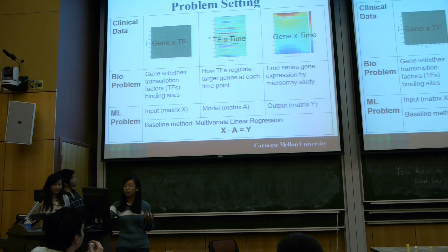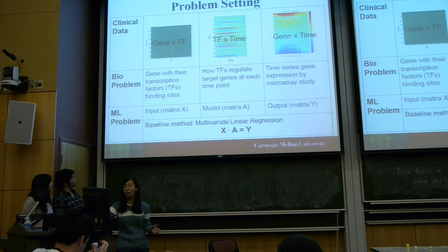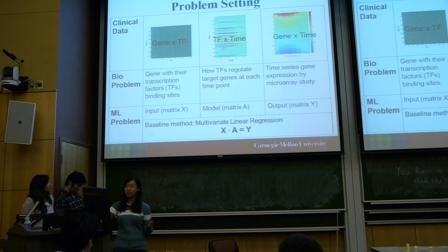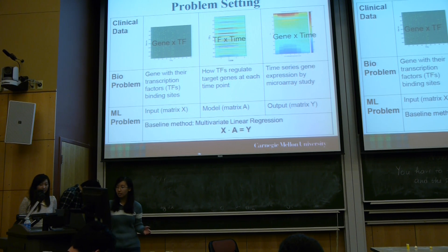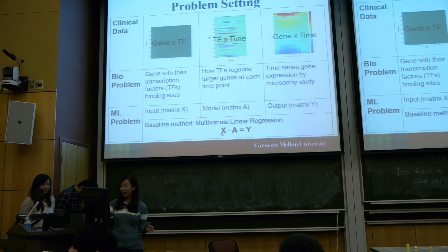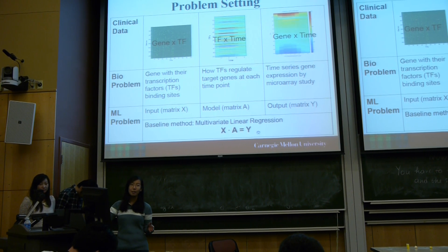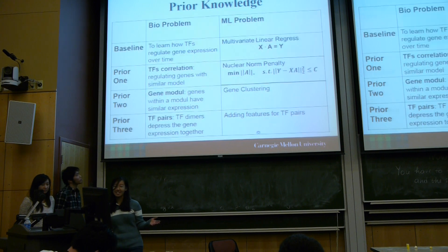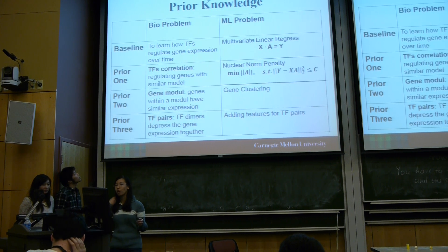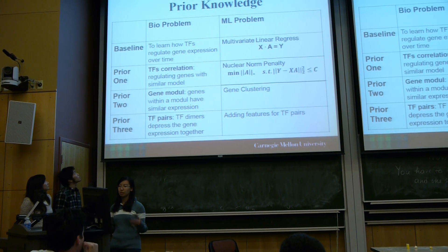When translating to machine learning problems, we have input matrix X and output matrix Y. We want to learn the model of how transcription factors regulate gene expression over time. Our baseline method uses matrix X times A equals Y. But things are not so easy, so we want to implement more prior knowledge to improve the prediction.